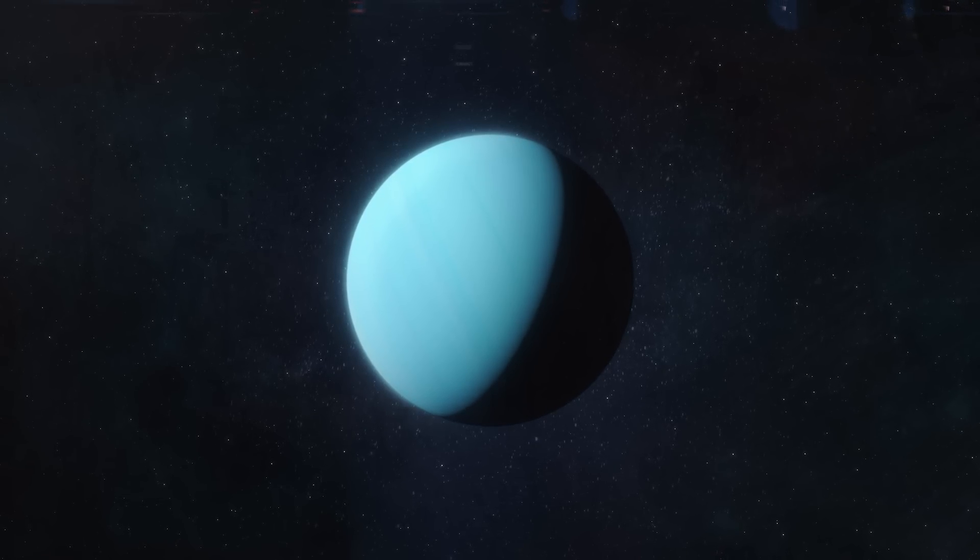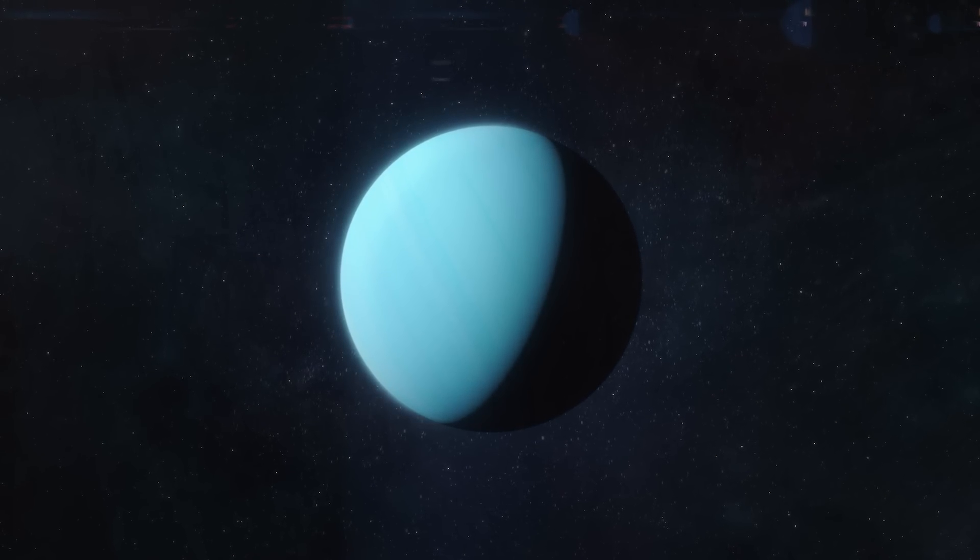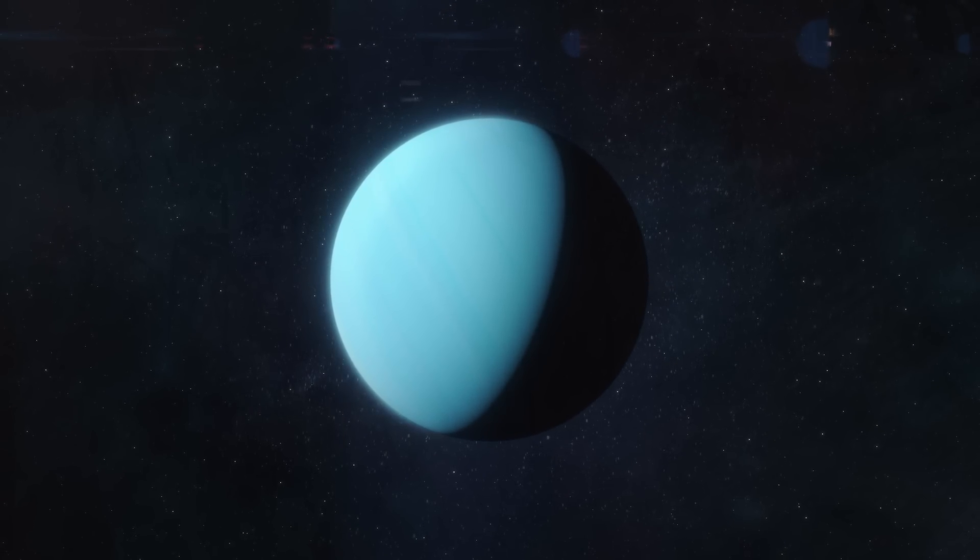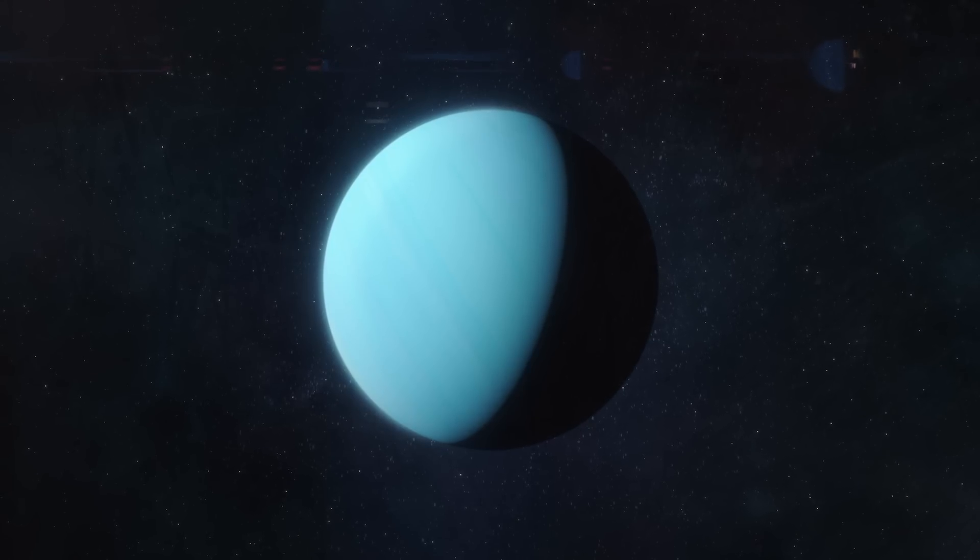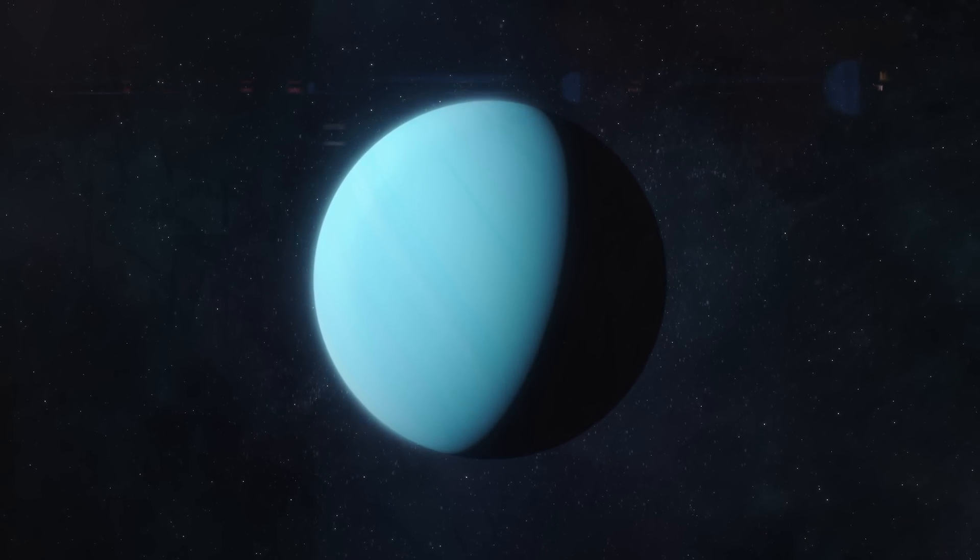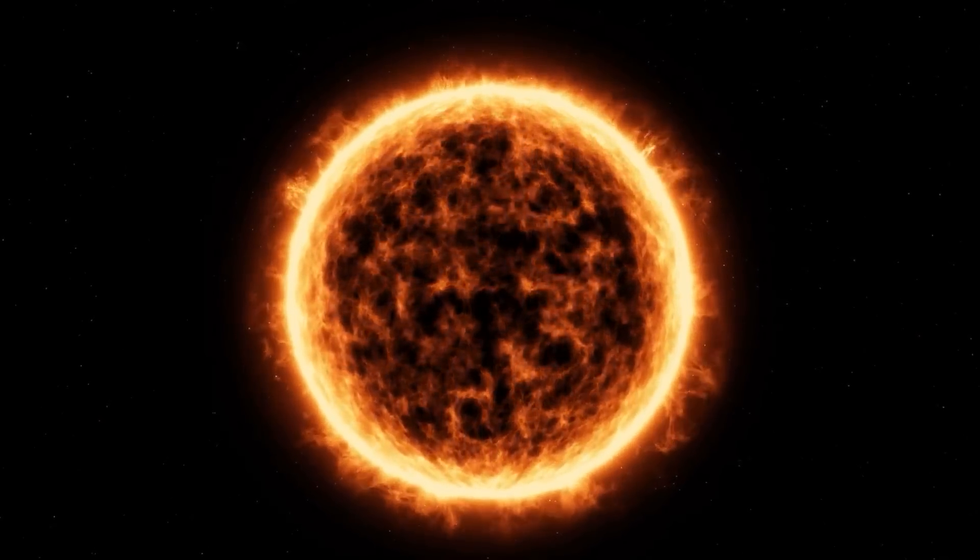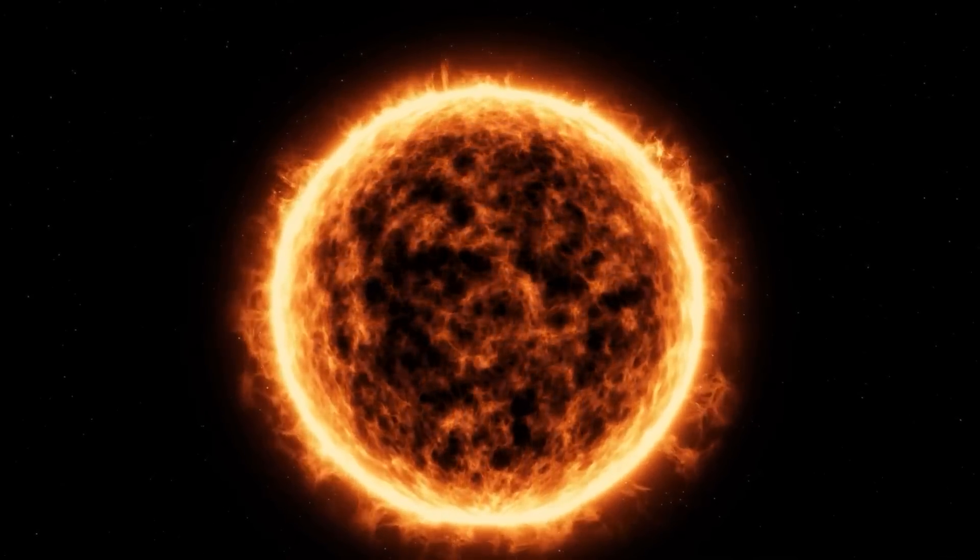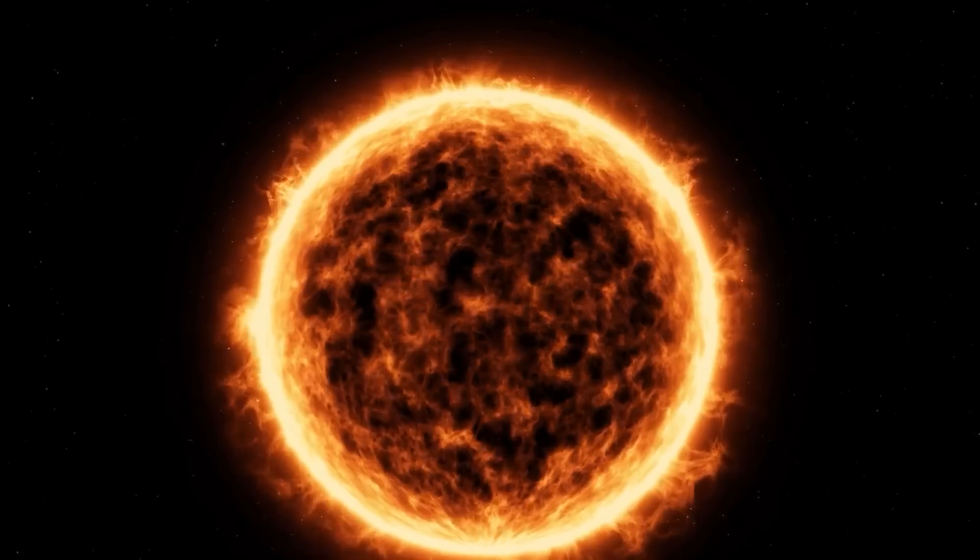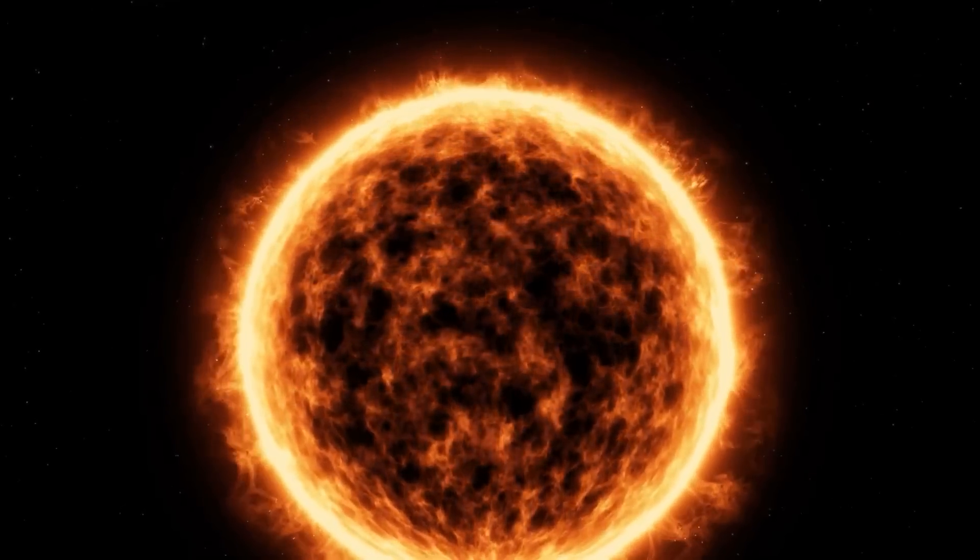So, why do only large objects become spheres? It all comes down to hydrostatic equilibrium, a fancy term meaning the object's gravity is balanced by the pressure pushing outward. In large planets and stars, gravity pulls in, while the object's own pressure pushes out, creating a smooth spherical shape.